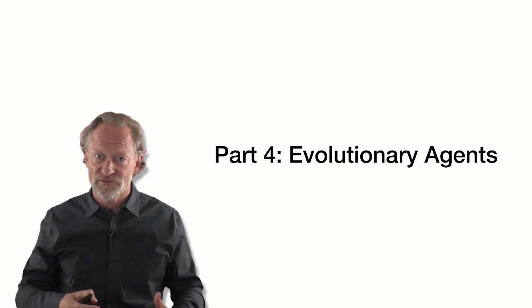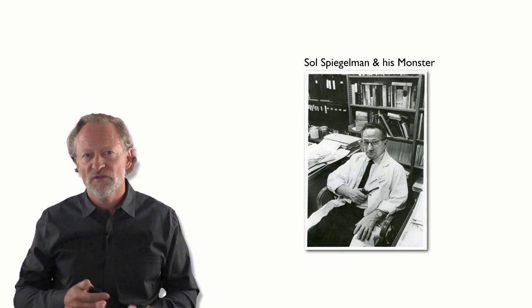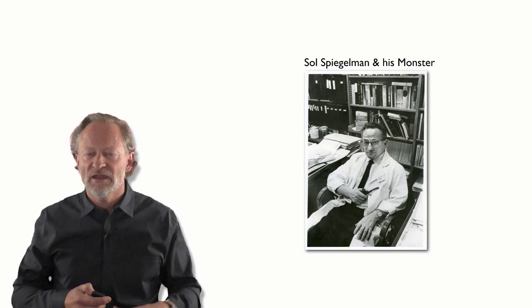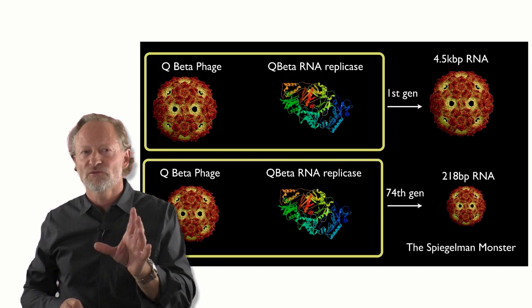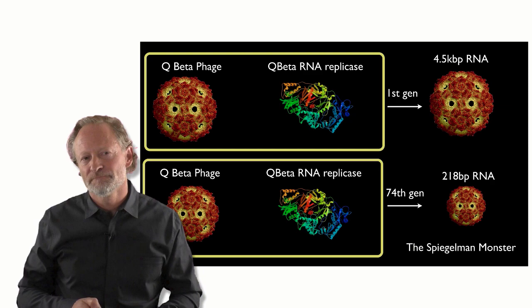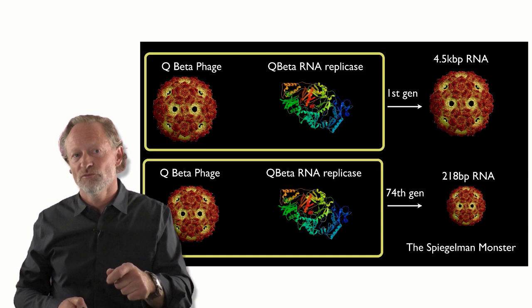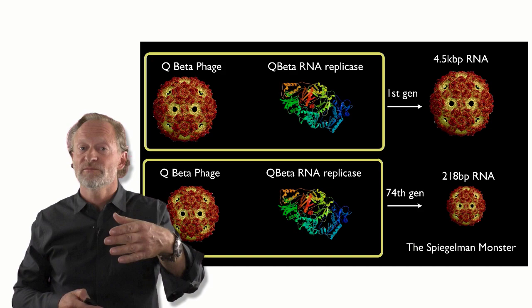Why does an understanding of what an evolutionary agent is help us understand the origin of life, and in particular, the multiple origins of life? It's worth starting with a case study here. This is Sol Spiegelman, and he was a virologist interested in the evolution of very simple viruses. The virus he worked with was called Q-beta phage, a very small RNA virus, and he asked: what is the minimum genome that Q-beta has to possess in order to successfully complete its life cycle?